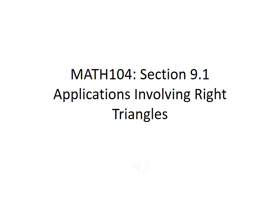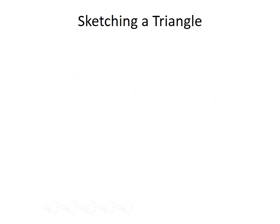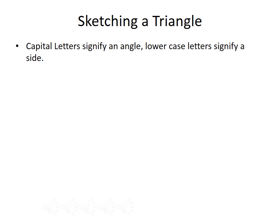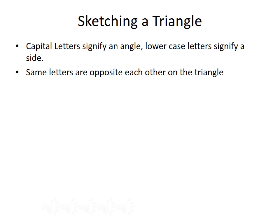In this lecture, we're going to talk about applications involving right triangles. Before we start solving any problems, we want to talk about sketching and labeling a triangle. When we draw out our right triangle, we're going to use the following notation: a capital letter will represent an angle, and a lowercase letter will represent the side. Furthermore, the same letters are going to be opposite each other on the triangle.